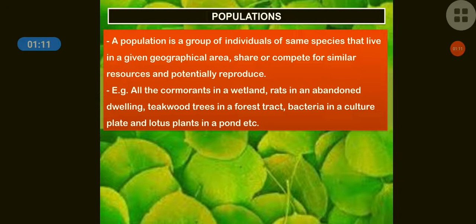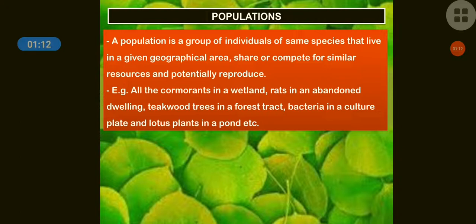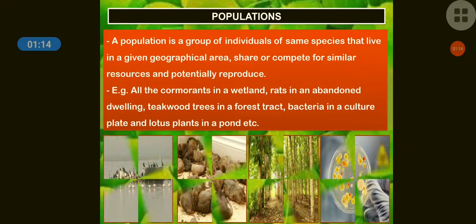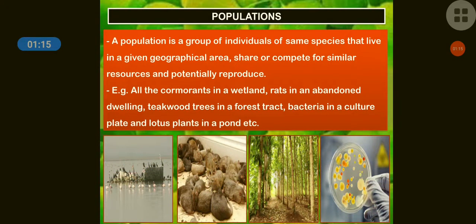So, population means similar species. A simple example: a classroom of students — all are Homo sapiens, all are one particular group. In forests, animals of the same species form one group. Population means one particular geographical area.